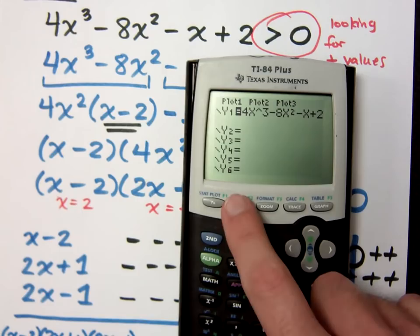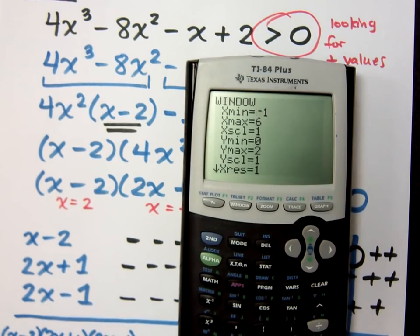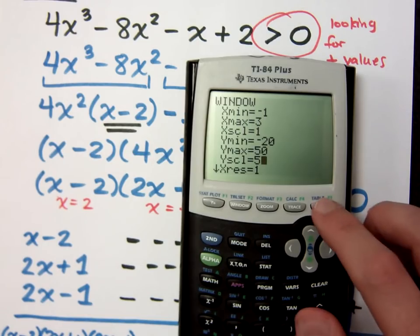Now I probably need to change the graphing window here. Let's go from negative 1 to 3. Let's say the y minimum is negative 20 and the y max is, let's say 50 with a y scale of 5. Let's see if this is something nice.